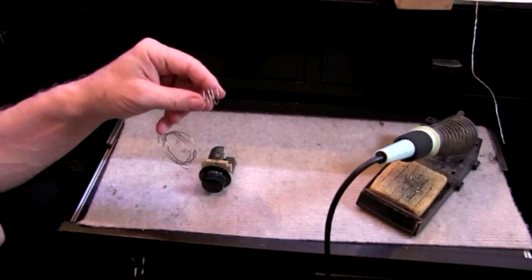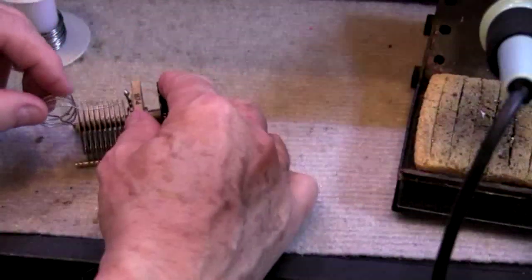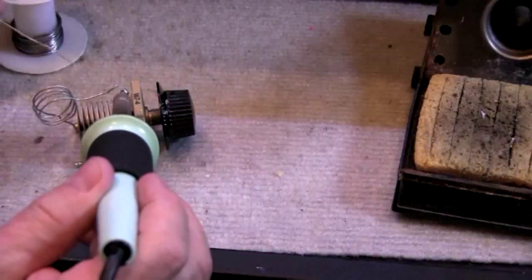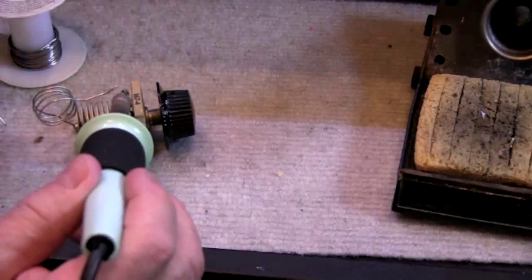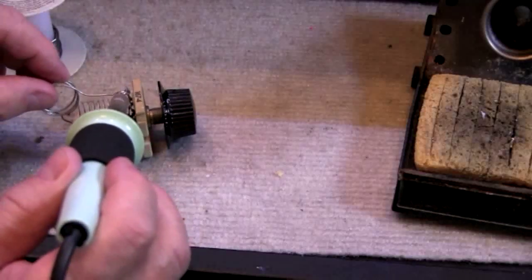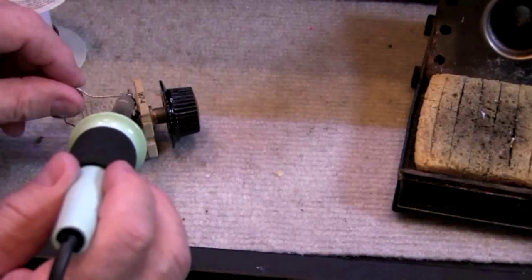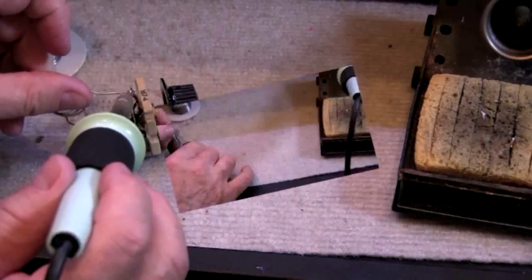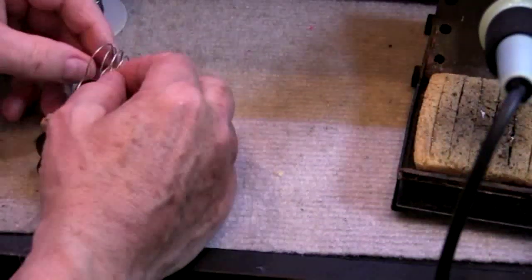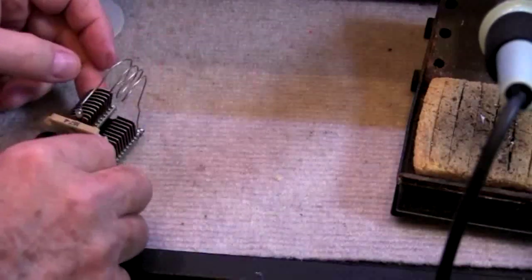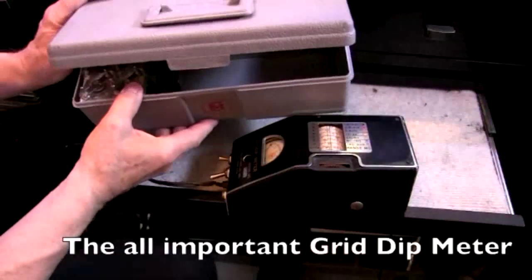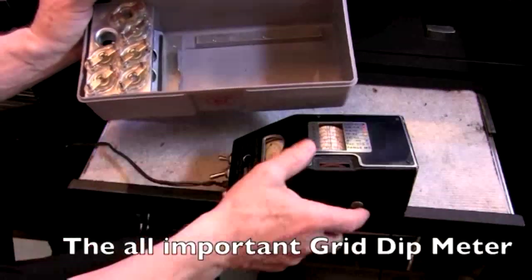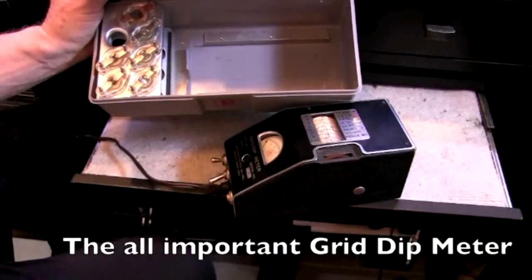And that's why the grid dipper is so important. Make about four or five turns of that little guy and put it across the capacitor, and you'll find out if it's going to be where you want it to be. I wanted this to come out around six meters, and so we soldered it all up. And now, how do you know where it is? You use the grid dip meter.